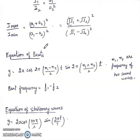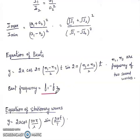Next is beats. The equation of beats is y = 2A cos[2π(n1 − n2)/2 · t] · sin[2π(n1 + n2)/2 · t], where n1 and n2 are the frequencies of two sound waves. Beat frequency is the difference of the two frequencies: F1 − F2, or n1 − n2.